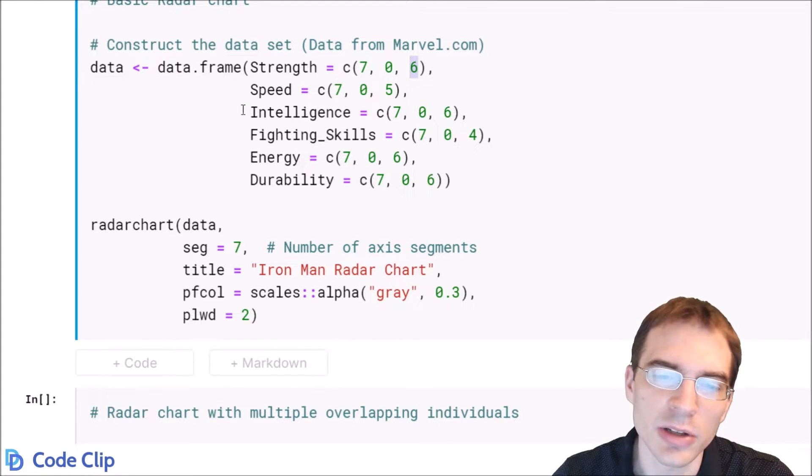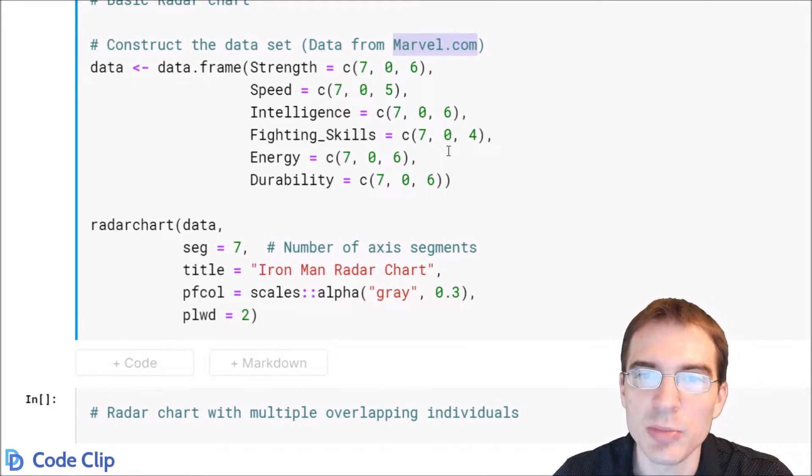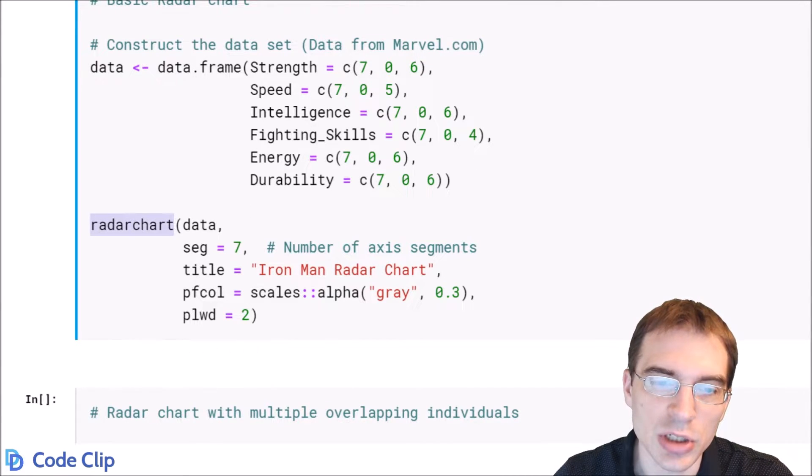And you just do the same thing for every other statistic here. And then to actually make the chart out of this data we call the radar chart function, that was part of that package we already loaded. We pass in the data set first, we already constructed that, so that's really the hardest part of doing this.